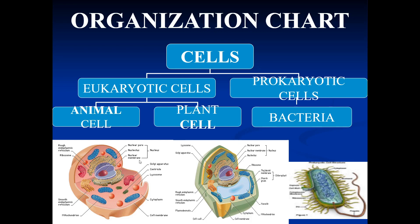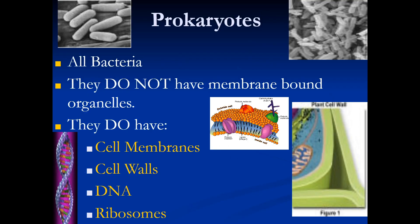Prokaryotic cells are single-celled organisms that can survive only by themselves, which are bacteria. Only bacteria are in the prokaryotic group, and they do not have a membrane but do have cell membranes, cell walls, DNA, and ribosomes inside them.